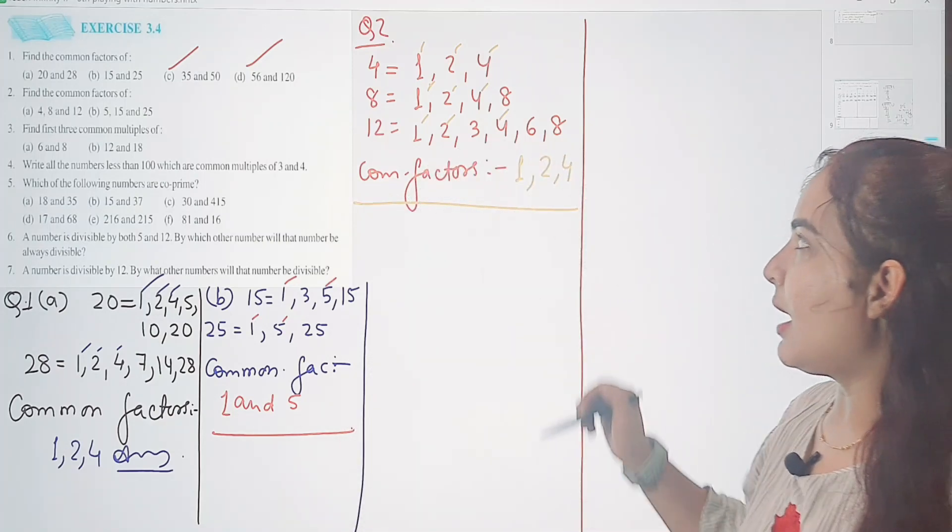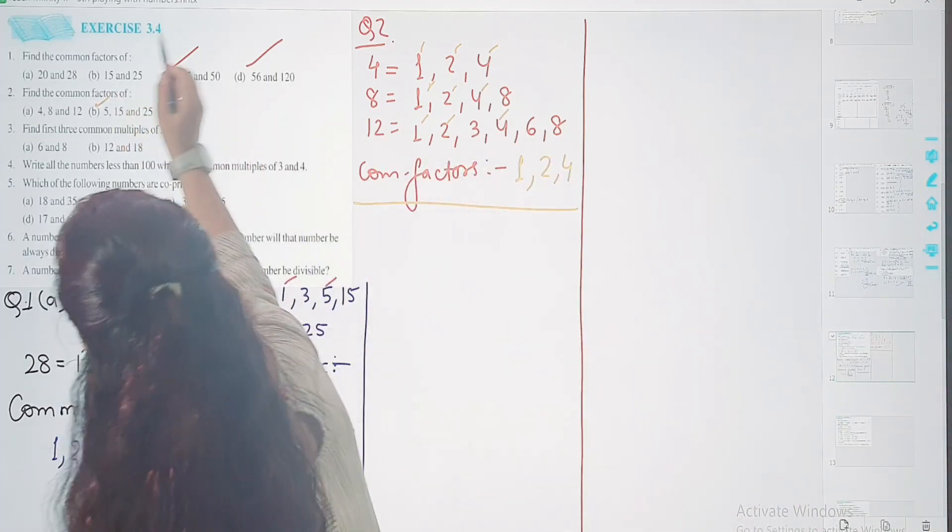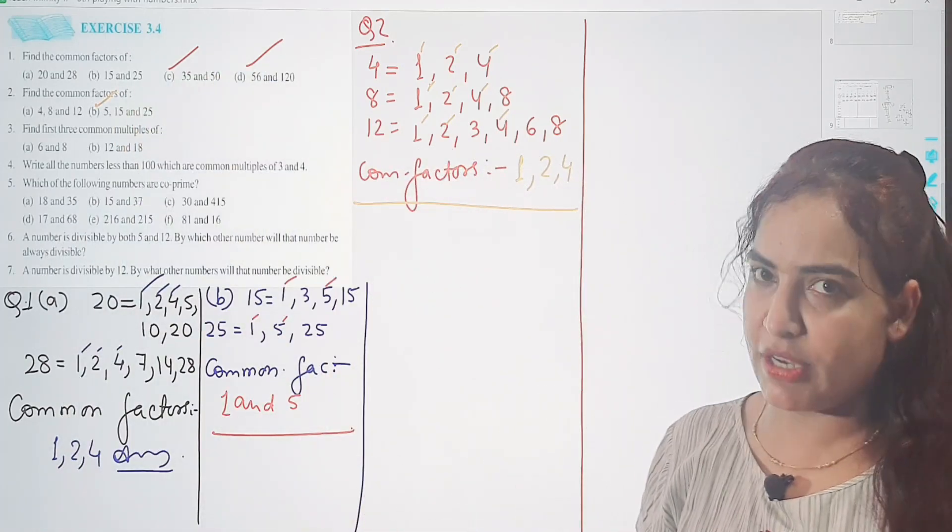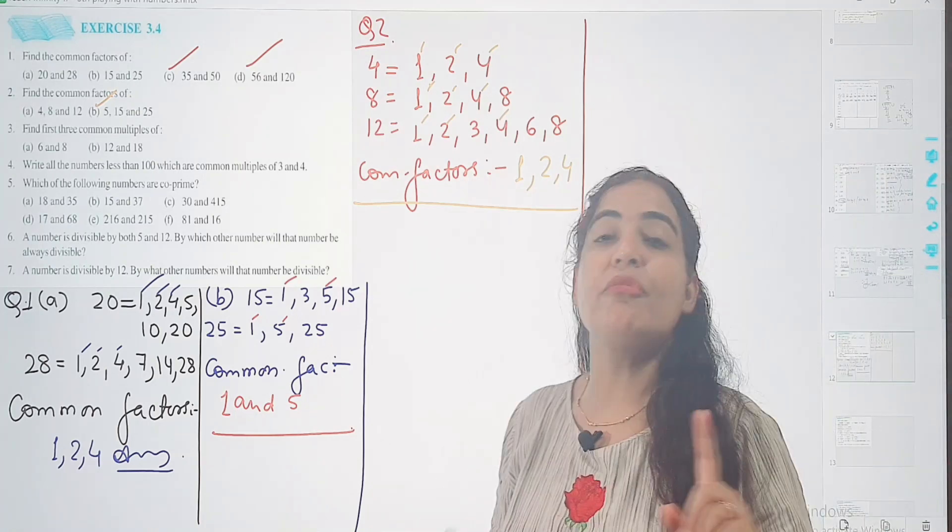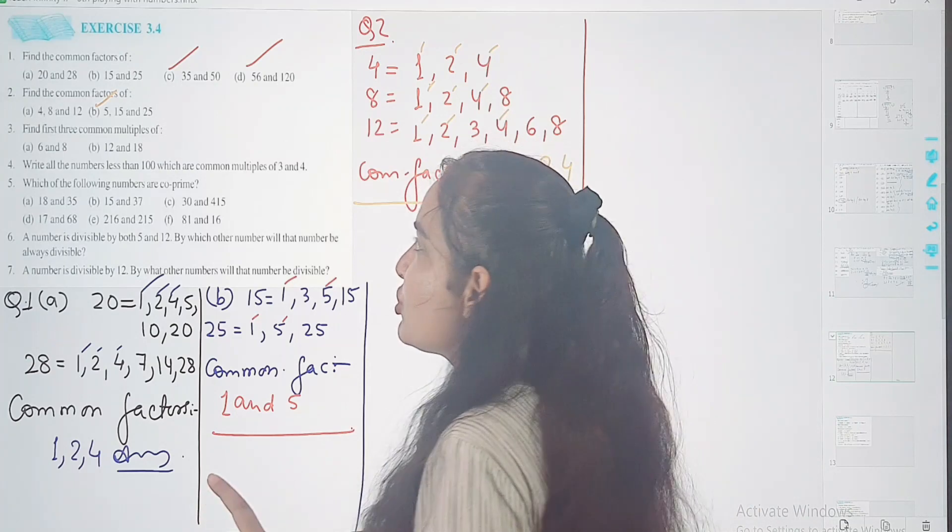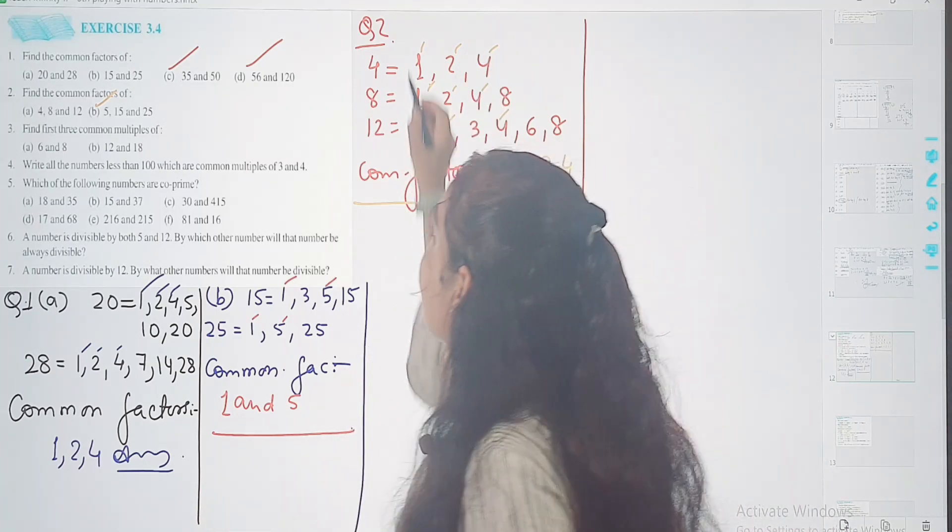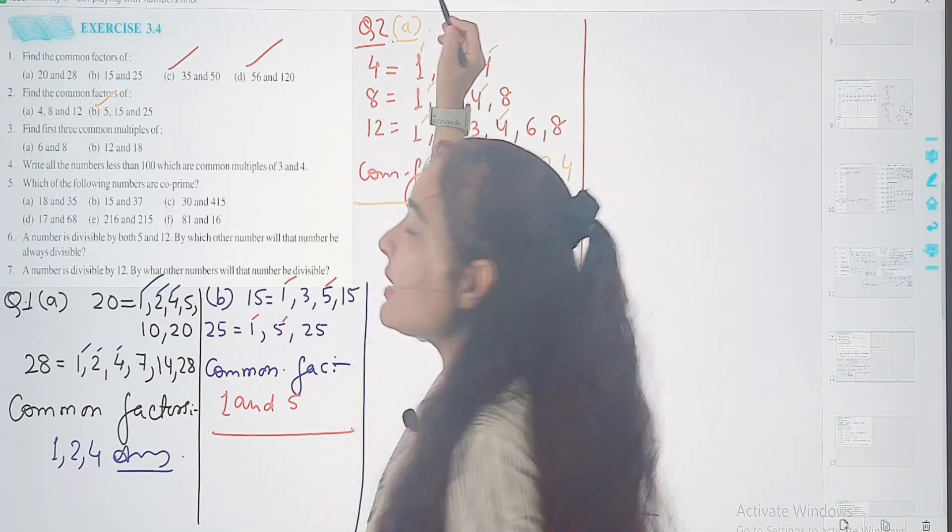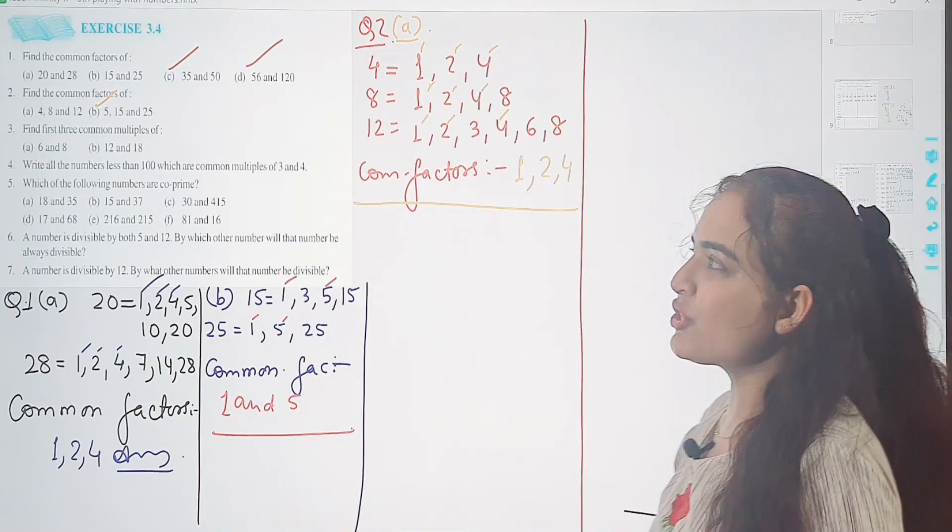Yahaan peh aapke numbers hain, common factors jo treen ho ke table mein aate hai. B aap khud karenge, 5, 15, or 25 mein. Main pata sakthi hoon ki isme 5 jo hai woh toh bilkul common hai, or 1 common hai. So question number 2 ka 1 and 5 common hai. Aap item step wise karenge or solve karke mujhe batayenge. Agar koi doubt hooga toh haam aapko explain karenge.